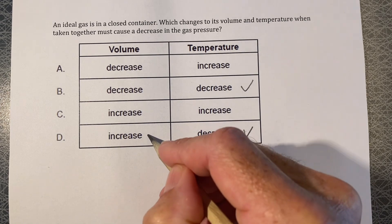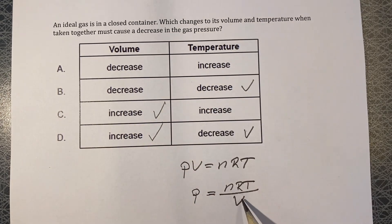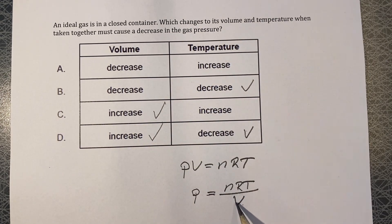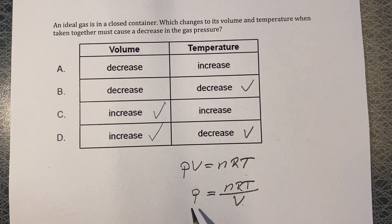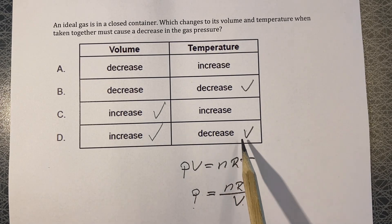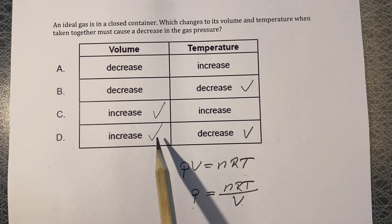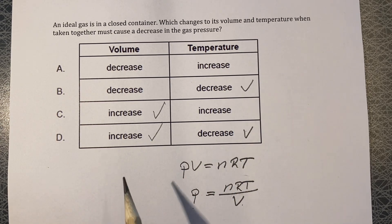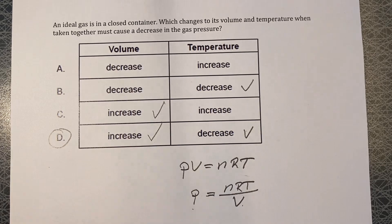If we increase the value of the denominator, the quotient will get smaller. Therefore, the pressure will get smaller, or we will have a decrease in pressure. And the option with two correct things here is D. So the answer is D.